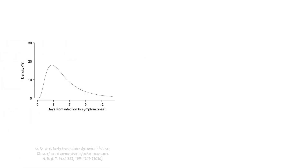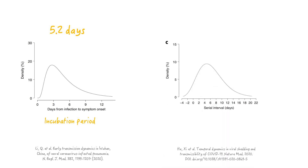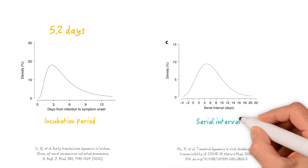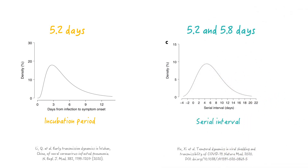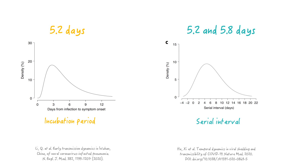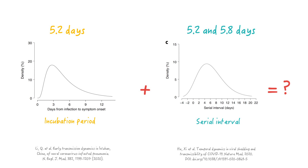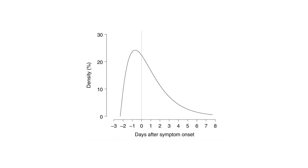So we know that the mean incubation period is 5.2 days and that the median and mean serial intervals are 5.2 and 5.8 days. Based on what we already know, without doing much calculation, we can already guess that there must be just as much transmission going on before symptom onset as thereafter. The authors did a much more sophisticated analysis to find out which distribution of infectiousness best fit their data.